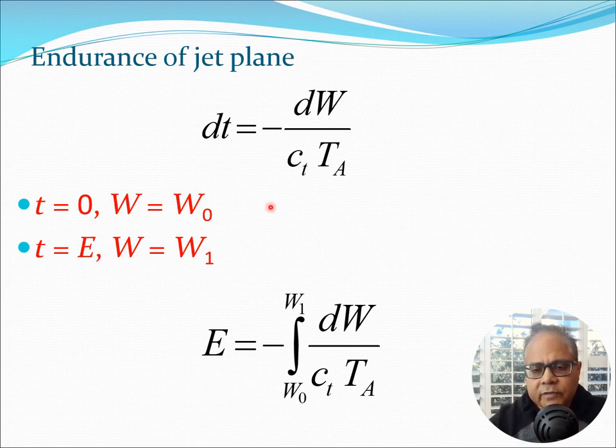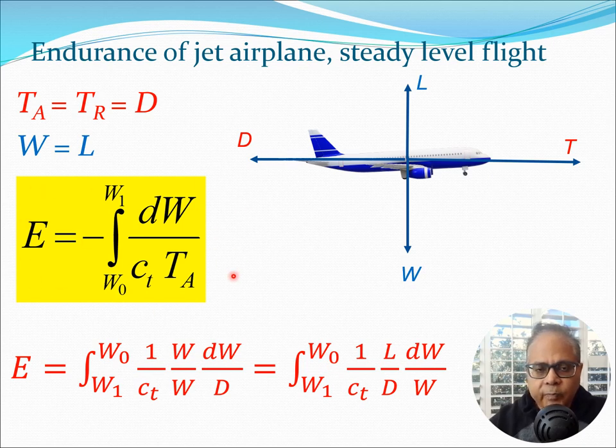Therefore I can take this equation for endurance and I can integrate it. So essentially dt has to be integrated from t equal to 0 where W is W0 and t equals to E where W is W1, and this is the integral E. Now this particular value we are going to expand it and simplify it because we want to get closed form solution. Do recall that we are in steady level flight, so we are going to make that assumption. Therefore during this flight lift is equal to weight and thrust is equal to drag. So we will also assume that TA is TR is D. The pilot has enforced this condition and also weight equals to lift.